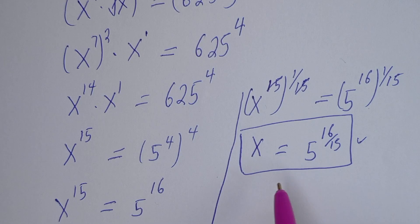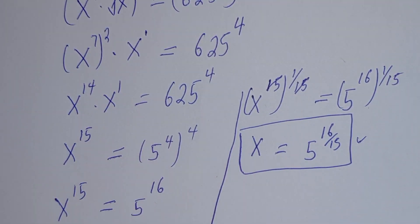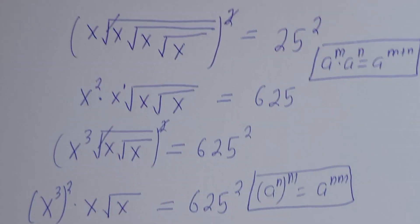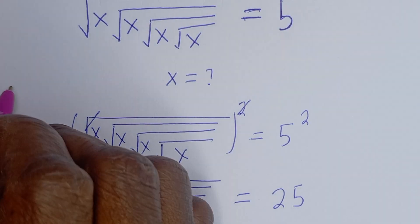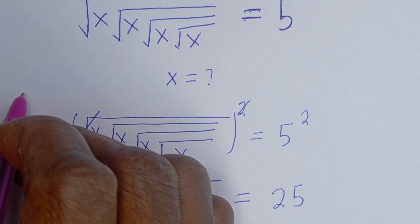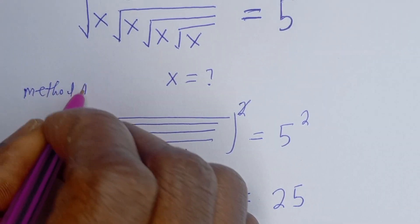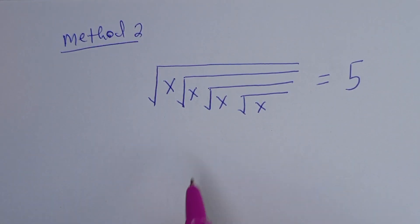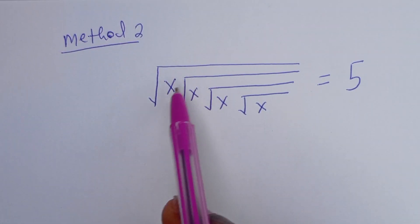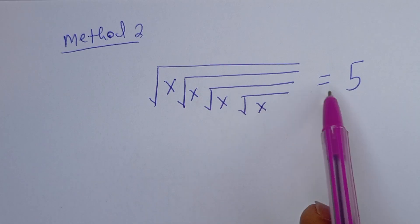We can also solve this using another method. Let's call the first approach Method 1. And also consider Method 2. From Method 2, we have square root of s, square root of s, square root of s, square root of s, is equal to 5.